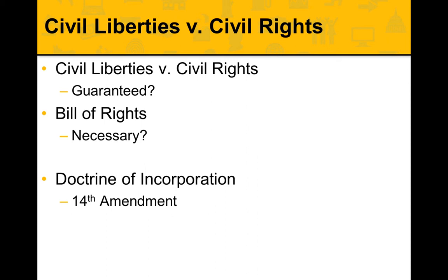Keep that phraseology in mind: the First Amendment is applied to the states through the 14th Amendment. This gets to the heart of the idea that we have dual citizenship — we're citizens of the federal government and also citizens of our state. Prior to the 14th Amendment, the Bill of Rights was really a conflict between federal rights and what states could do.